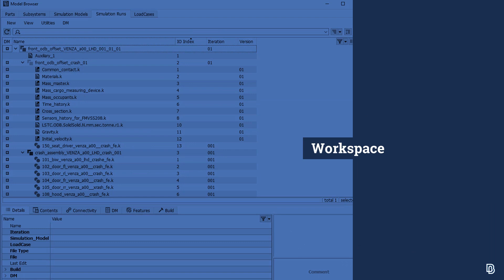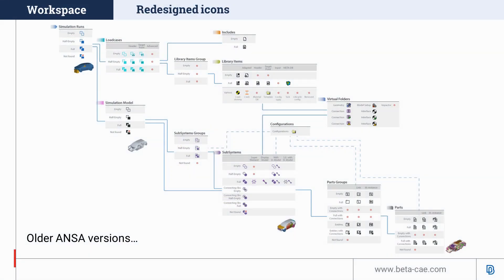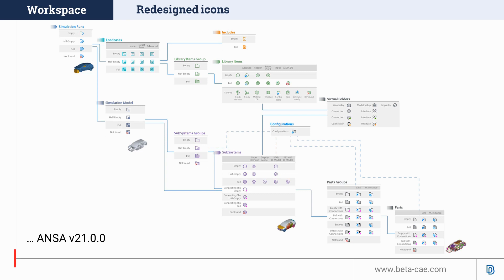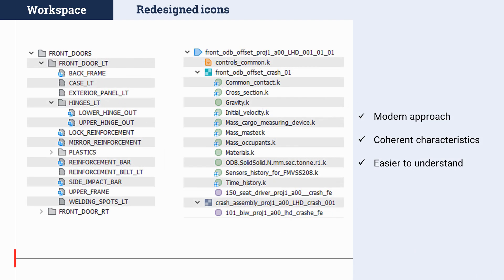First up is the workspace, the front end that assists users in the bottom-up organization of modular models. In this version, we have redesigned the icons used for parts and all model containers. We introduced a new family of icons with common characteristics such as style, colors, and indicators used across the modular run environment. These icons not only represent a more modern approach, improving the look and feel of the tools, but they also make it easier to distinguish and understand each model browser container, improving the overall user experience.